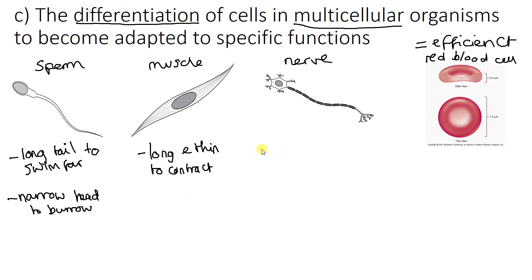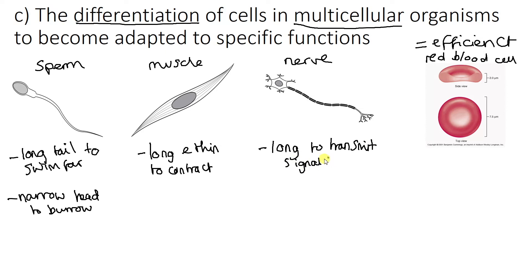An adaptation of a nerve cell again is that it is long, just like the muscle cell. It is long because it needs to transmit signals over longer distances. One of your longest nerves actually goes right down to your toes, and your leg is called the sciatic nerve.